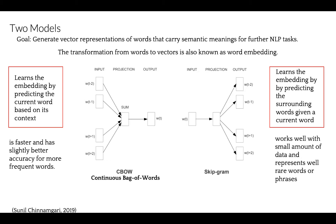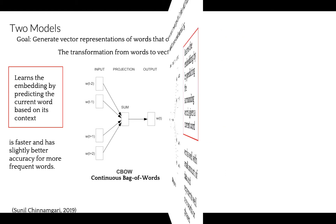Each word vector is typically represented by several hundred dimensions, and each unique word in a corpus is assigned a vector in the space. The reason for transforming words to vectors is so that machine learning algorithms can perform linear algebra operations on numbers in vectors instead of words.